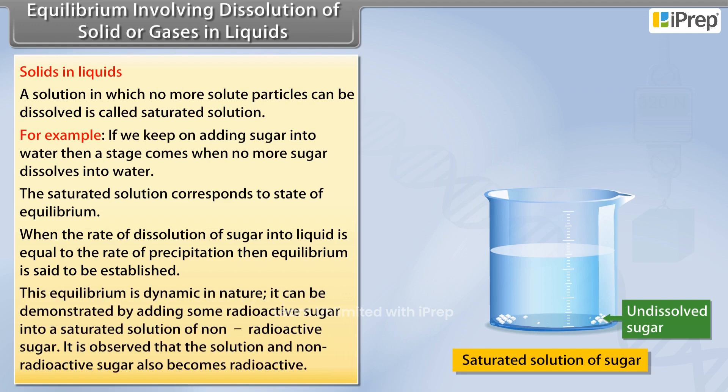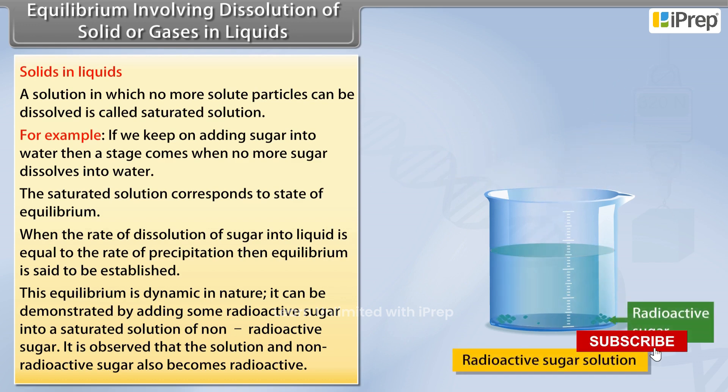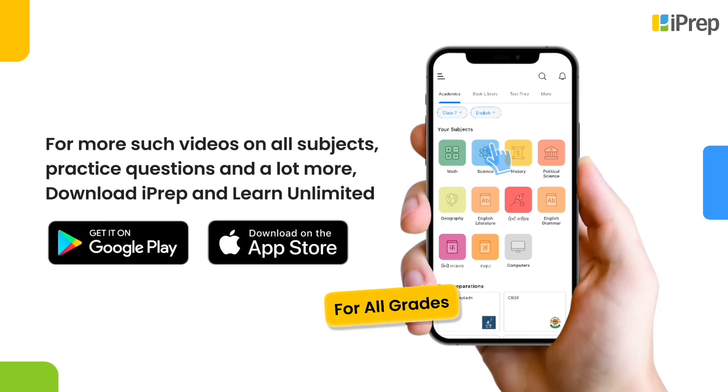This equilibrium is dynamic in nature. It can be demonstrated by adding some radioactive sugar into a saturated solution of non-radioactive sugar. It is observed that the solution and non-radioactive sugar also becomes radioactive.